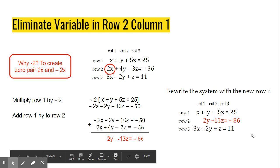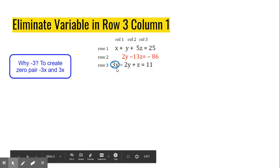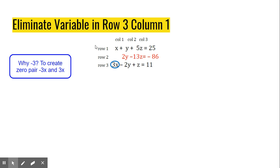Now, the next thing in our process is this. We got rid of this variable. Now, we need to get rid of this variable. So we're going to multiply by negative 3. We're going to multiply Row 1 by negative 3. Why did I pick negative 3? Because I need a negative 3x and a positive 3x for these two to be able to cancel out. That's what a zero pair means. So I'm going to multiply Row 1 by negative 3.